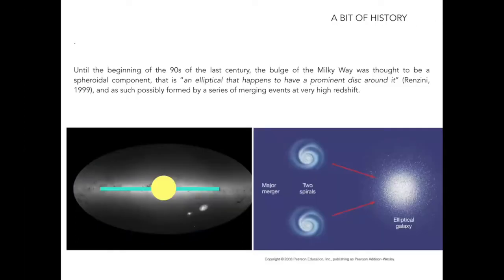For a long time, the Milky Way bulge was seen as what we would call a classical bulge — a spheroidal component that happens to have a prominent disk around it. This is not only a matter of nomenclature, but pointed to the idea that the evolutionary and formation path of the bulge was different from that experienced by the disk.